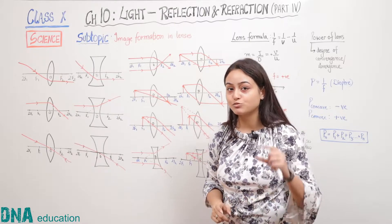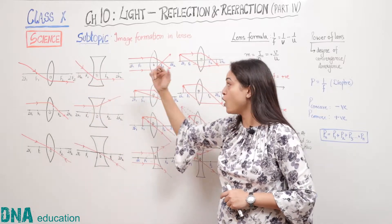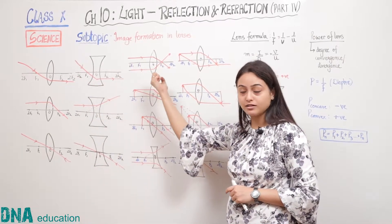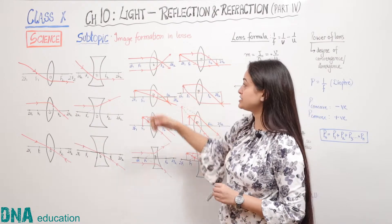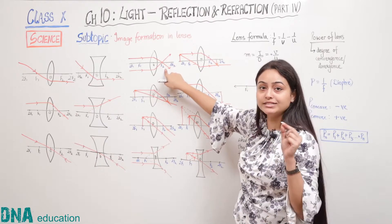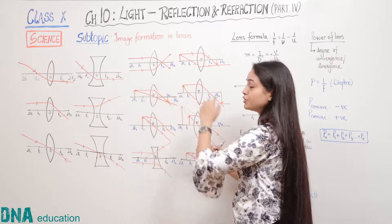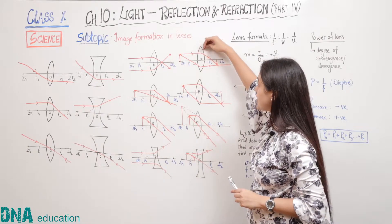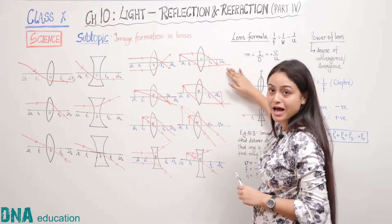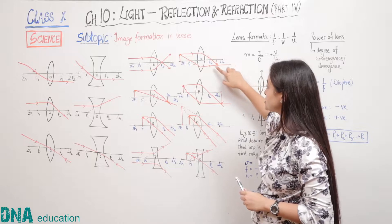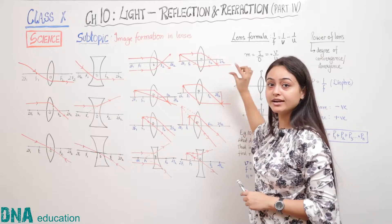Now let us consider the ray diagrams of convex lenses. The first case is when the object is placed at infinity. In that case, parallel light rays will converge at focus, and you can see that a real, inverted and point-sized image is formed. Next, if the object is placed beyond 2F, a parallel light ray will converge at focus and the light ray coming from focus will emerge parallel. In this case the light rays meet between F2 and 2F2, forming a real, inverted and diminished image.